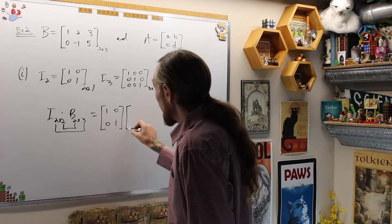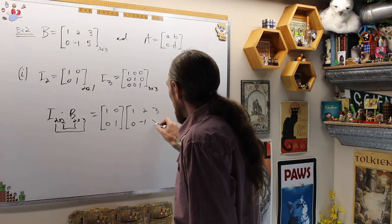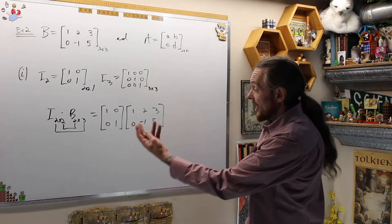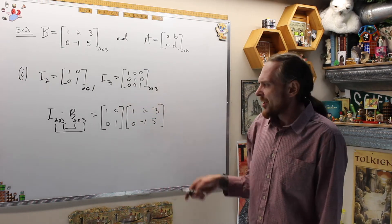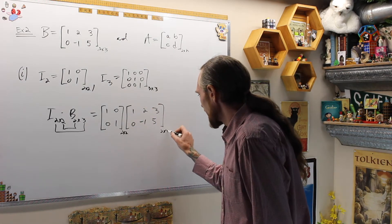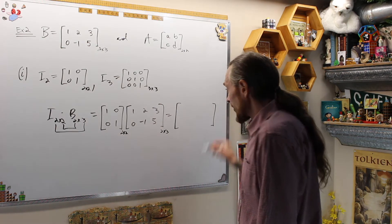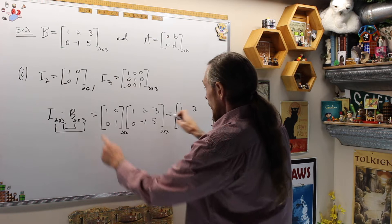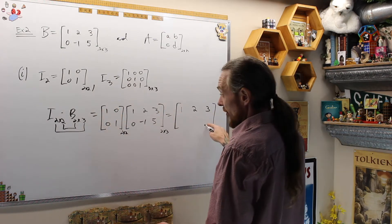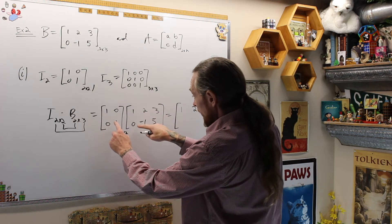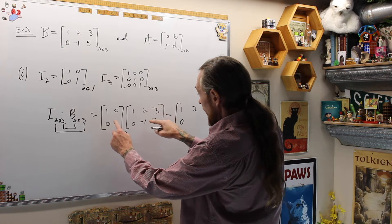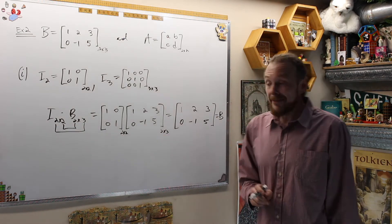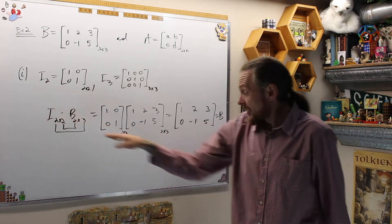We're going to get [1, 0; 0, 1] multiplied by [1, 2, 3; 0, -1, 5]. The proof is essentially the general idea of this stage. This is 2 by 2 times 2 by 3, well defined, giving a 2 by 3 matrix. We get 1+0=1, 2+0=2, 3+0=3, then 0+0=0, 0+(-1)=-1, 0+5=5, which happens to be the matrix B again. So multiplying I2 by the 2 by 3 matrix gives us B.